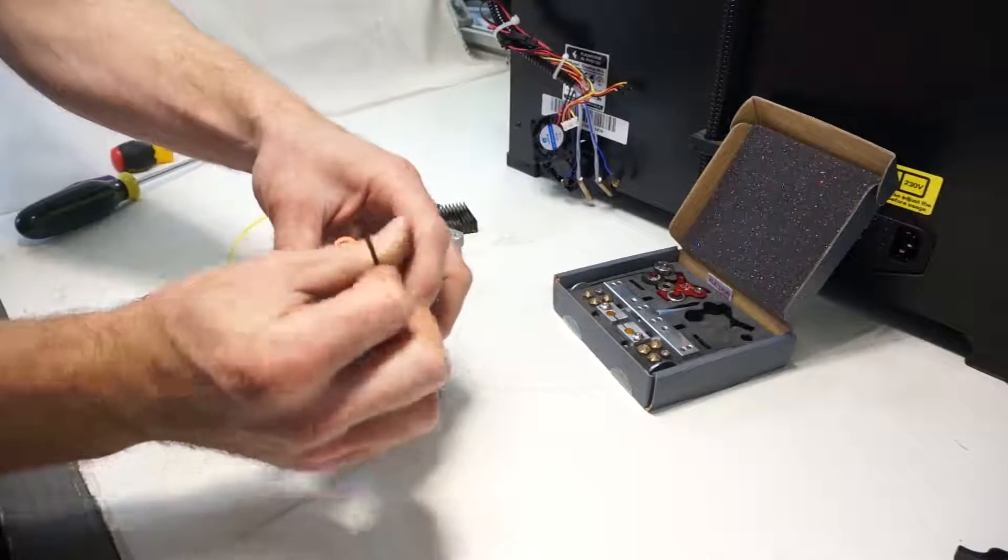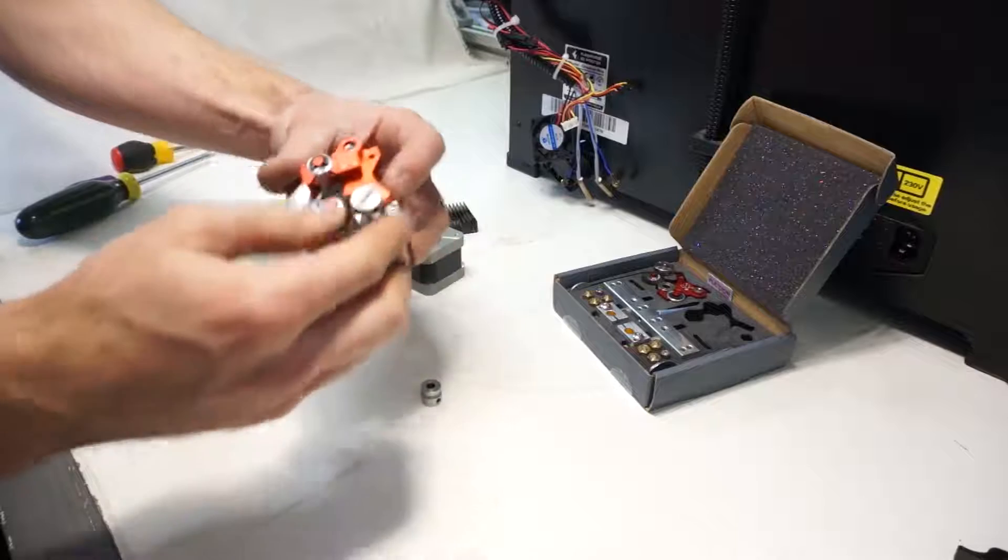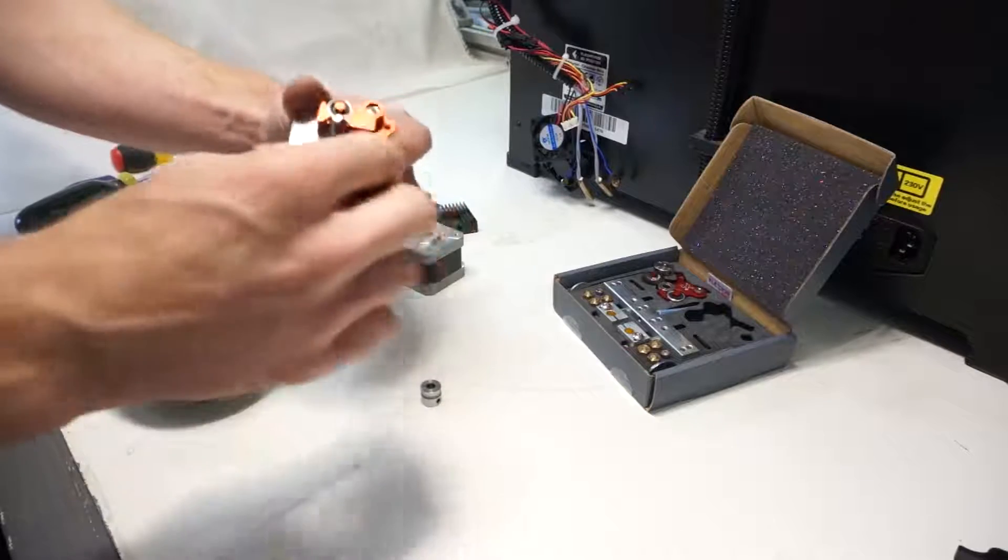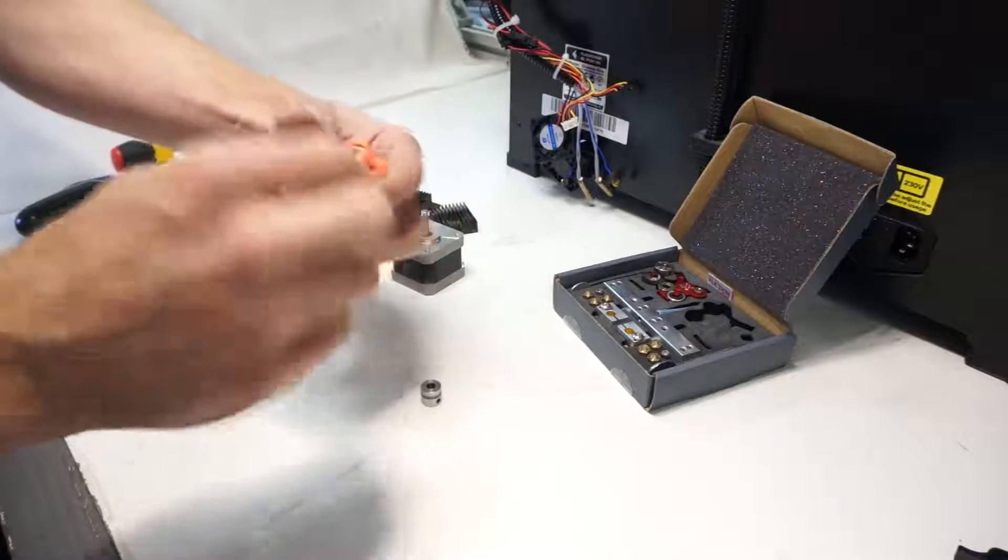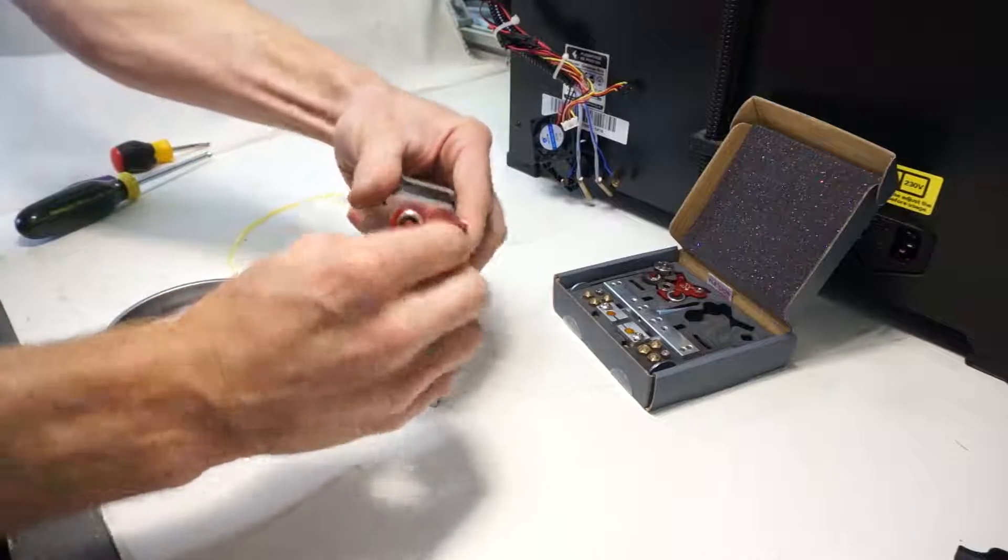So after you've confirmed that you have enough thread length, you can put the arm and the cam dial on the assembly by threading in both the shoulder screws.